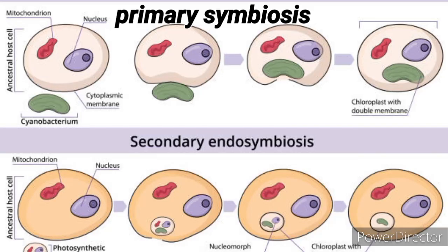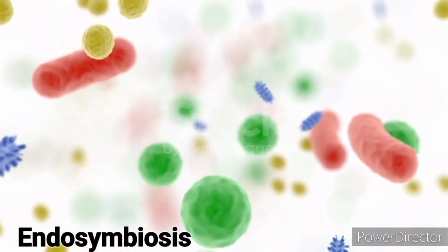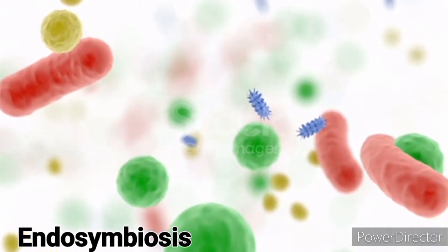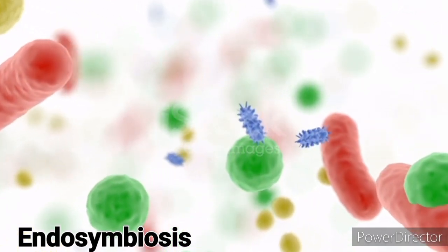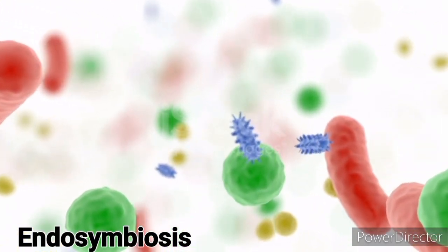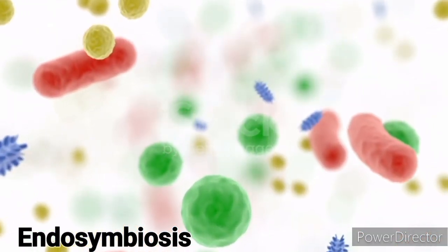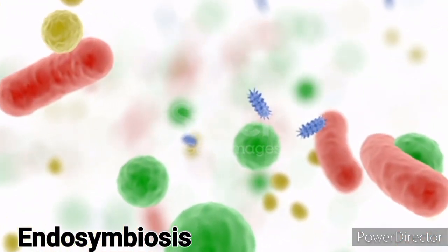Endosymbiotic theory. Mitochondria are believed to have originated from ancient symbiotic bacteria that were engulfed by early eukaryotic cells. This theory suggests that mitochondria evolved from free-living bacteria that formed a mutually beneficial relationship with host cells.